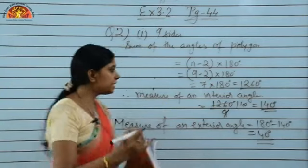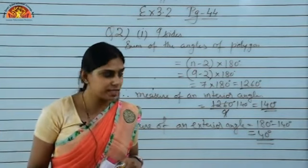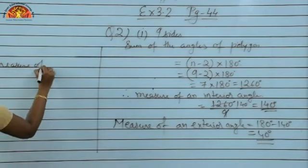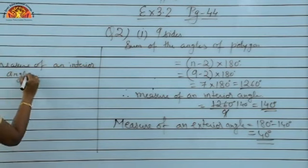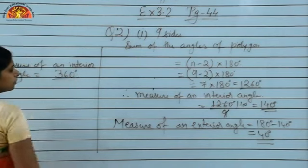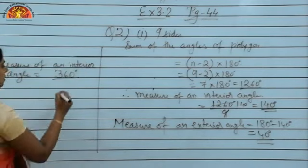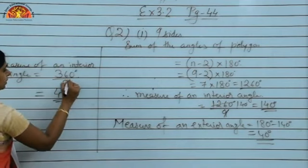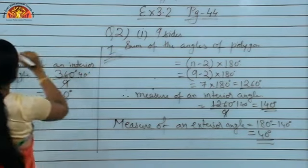The second method is much easier. The sum of all exterior angles of any polygon is 360 degrees. So measure of each exterior angle = 360 ÷ 9 = 40 degrees. Both methods give the same answer of 40 degrees.